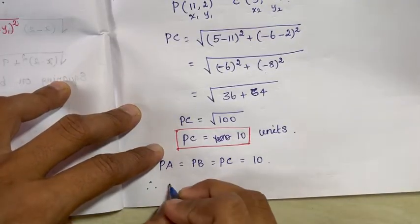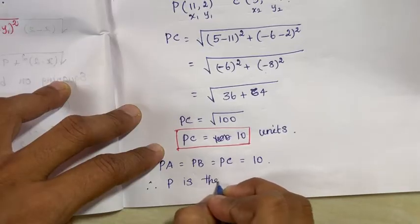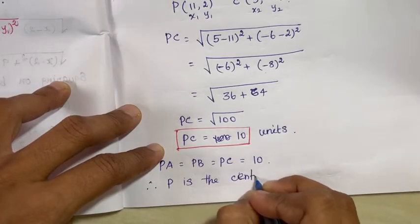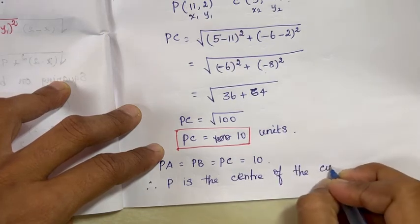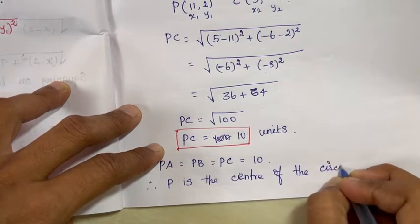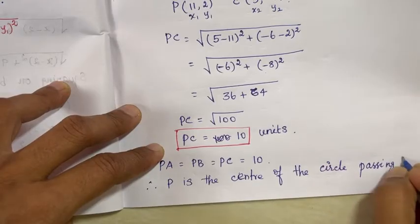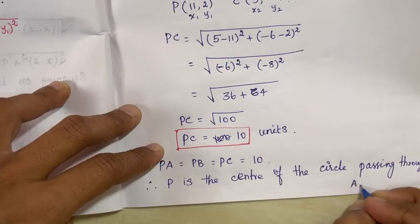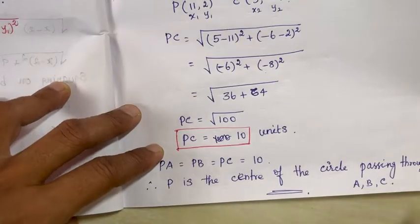Since PA = PB = PC = 10 units, P is the center of the circle passing through A, B, and C.